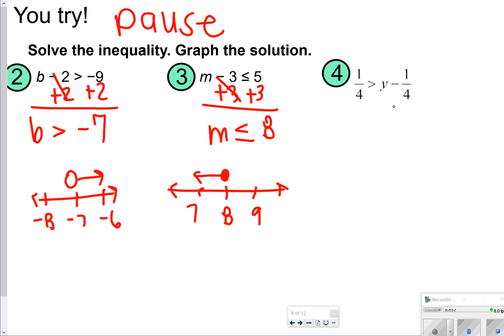For number 4, we're going to be adding 1 fourth to the other side. Notice I'm still moving away from my variable, so I'm going to have 1 fourth plus 1 fourth, that's 2 fourths or 1 half is greater than y, but remember it might be easier to rewrite that as y is less than 1 half. And then when you write down your numbers, we'll have an open circle going to the left. So if you didn't rewrite that one, it might help to do that just so you can make sure you're graphing correctly.